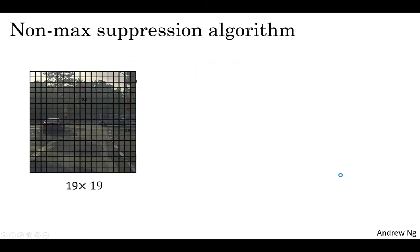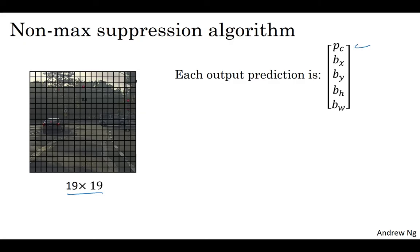So let's go through the details of the algorithm. First, on this 19 by 19 grid, you're going to get a 19 by 19 by 8 output volume. Although for this example, I'm going to simplify it to say that you're only doing car detection. So let me get rid of the C1, C2, C3, and pretend for this slide that each output for each of the 19 by 19, so for each of the 361, which is 19 squared, which is 361 positions, you get an output prediction of the following, which is the chance that there's an object and then the bounding box. And if you have only one object, there's no C1, C2, C3 prediction.